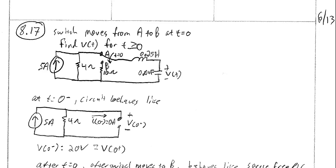In this video I will introduce how to solve problem 817. In this problem you have the circuit as seen here. You've got a 5 amp current source, a 4 ohm resistor, and a switch starting out in position A that at t equals 0 comes down to position B. You've got a 10 ohm resistor, a 0.25 henry inductor, and a 0.04 farad capacitor. The reference here is V, and we are asked to find V of t for any t greater than or equal to 0.